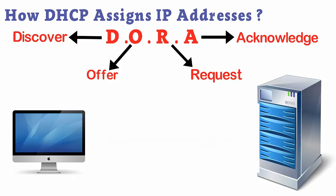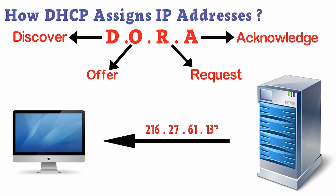The fourth step is Acknowledge. The targeted DHCP provider acknowledges the request and issues an IP address to the computer that doesn't match any other IP addresses currently active on the network.